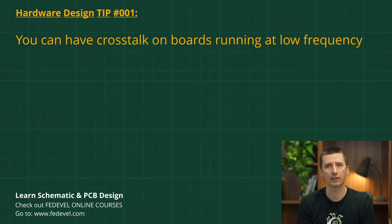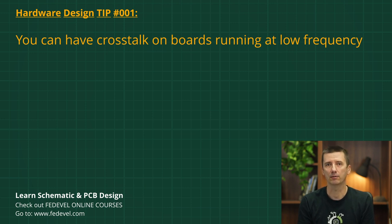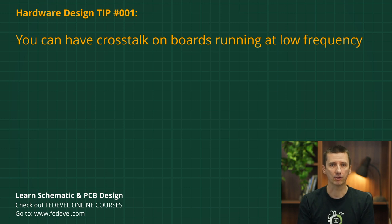Even when you are doing a layout for a 5 megahertz microcontroller, or even when you are routing tracks for a 1 hertz signal, these low-frequency signals can create noise on the tracks routed close to them. If your board is not designed properly, even changing a signal level on a GPIO pin can create crosstalk high enough to cause a random reset, generate false interrupts, or damage information transferred through your data bus.